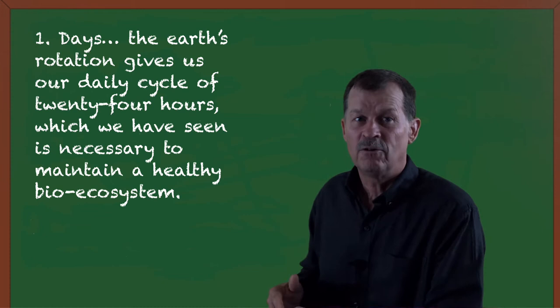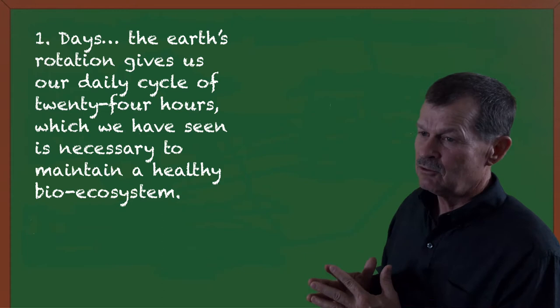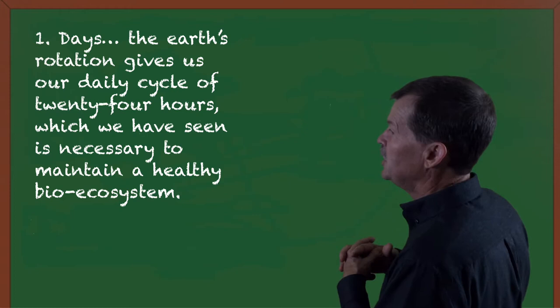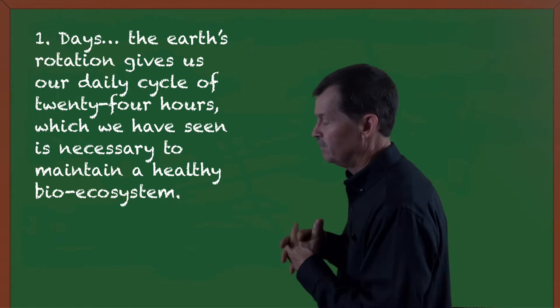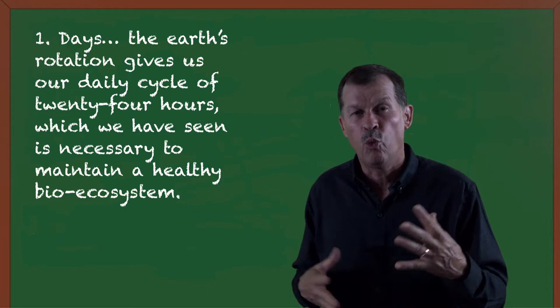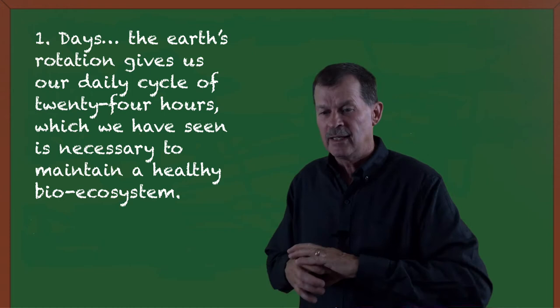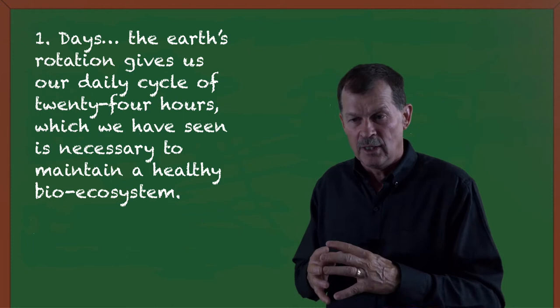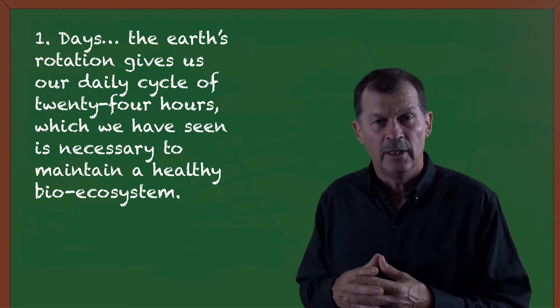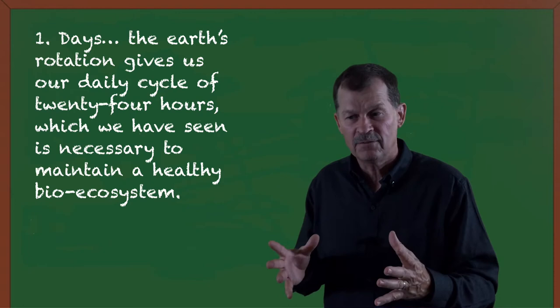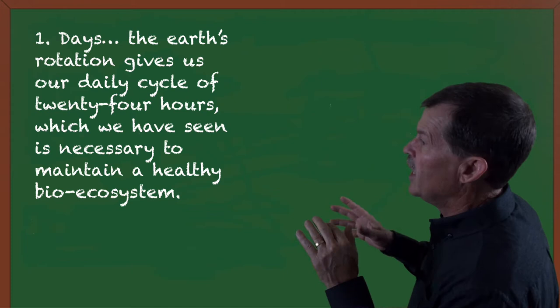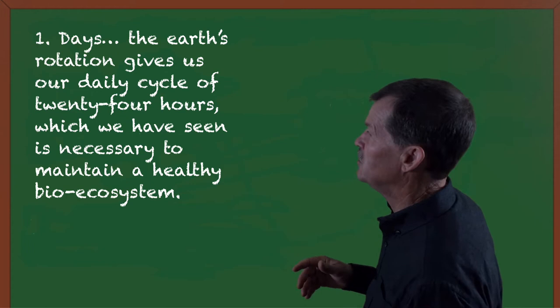The Earth's rotation gives us a daily cycle of 24 hours, which we have seen is necessary to maintain a healthy bioecosystem. The circadian rhythm cycle requires an on-off period, a light-dark period to maintain good health. Too much dark or too much light can send the biological clock that's within us out of rhythm. And that same clock, the plant world seems to also have. So, we have a daily cycle of 24 hours, which is necessary for the maintaining of health.